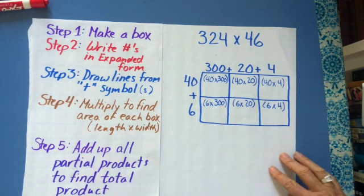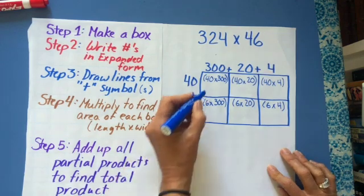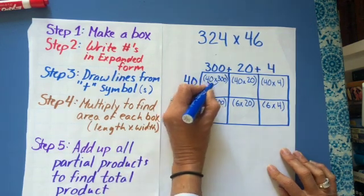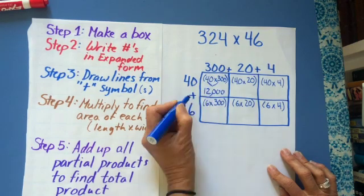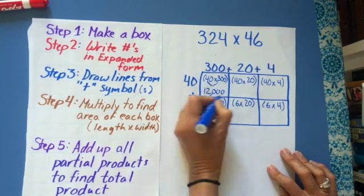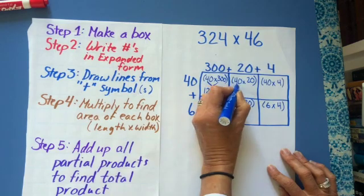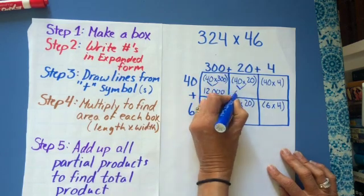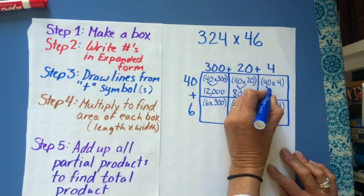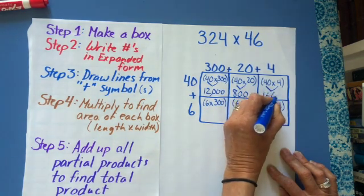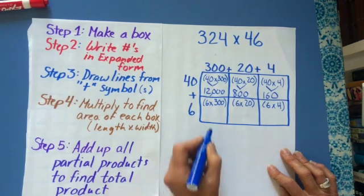Now I need to find out the partial products of each box. So this right here is 12, and there's three zeros, one, two, three. So that's one partial product. Here, 4 times 2 is 8, two zeros, the second partial product. 4 times 4 is 16, plus one zero. There's the third partial product.